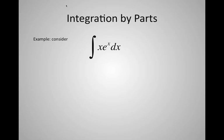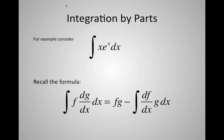We know how to integrate x by itself — that gives x squared over 2 — and we know how to integrate e to the x by itself, getting the exponential back. But the product is not so easy. Writing down the integration by parts formula: integral of f·(dg/dx) = f·g minus integral of (df/dx)·g. The problem is picking f and g. We want to pick f so that when we take its derivative, we get a simpler function.